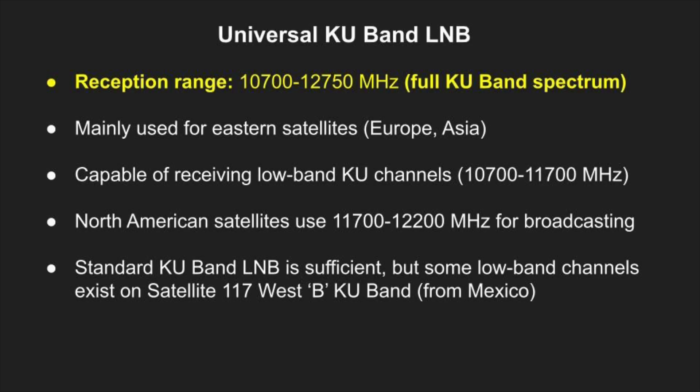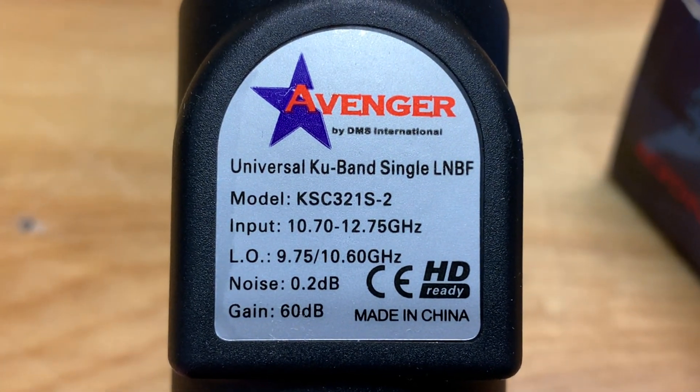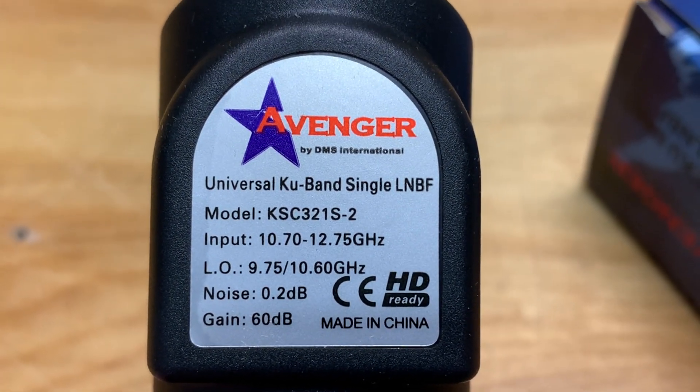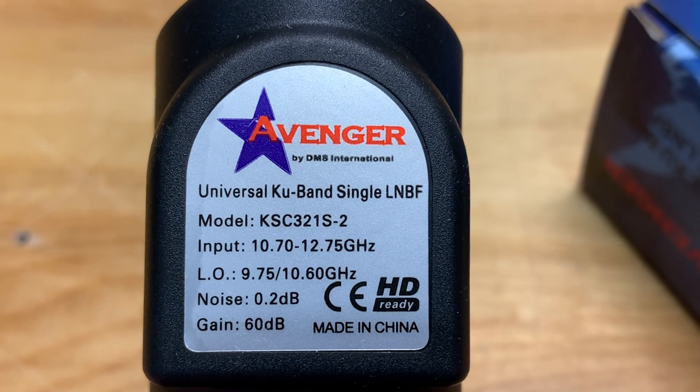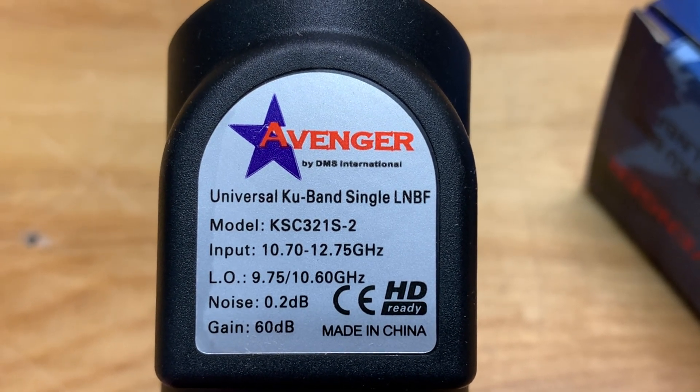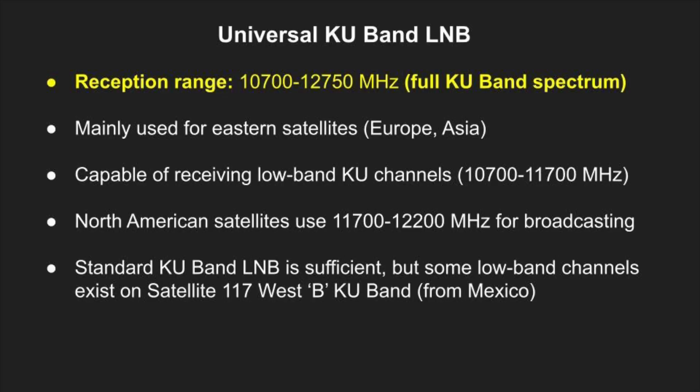If you receive eastern satellites, as they do in Europe and Asia, then you have to use a universal LNB or you're going to be missing out on a lot of channels. Now in North America the story is a little different. A standard KU-band LNB is more than sufficient in North America since only half of the band is used here for broadcasting, from 11,700 to 12,750 MHz.